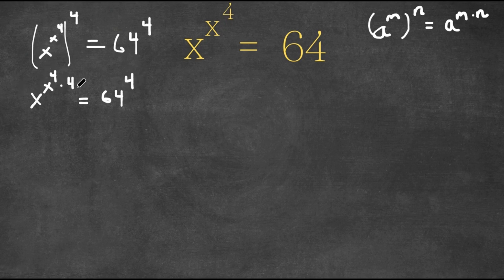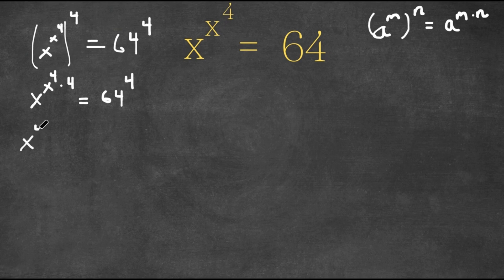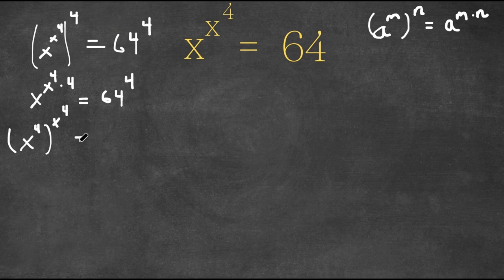Now what I'm going to do is rearrange this. I'm going to change this back into this form. However, instead of saying x to the power of x to the power of 4 to the power of 4, I'm going to say x to the power of 4 to the power of x to the power of 4. And this is still equal to 64 to the power of 4.